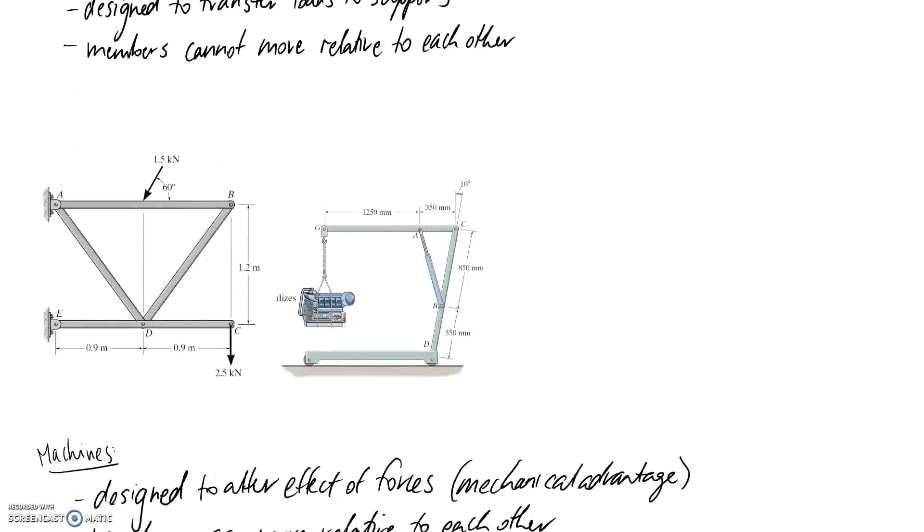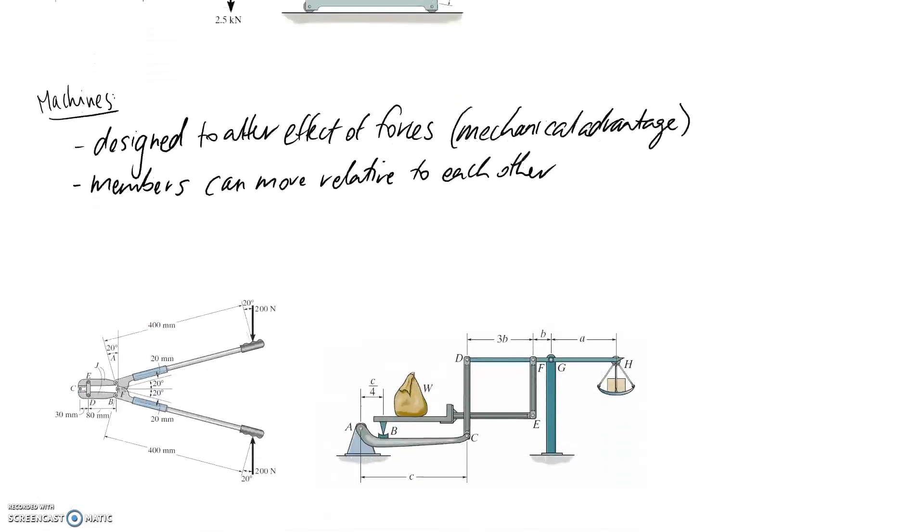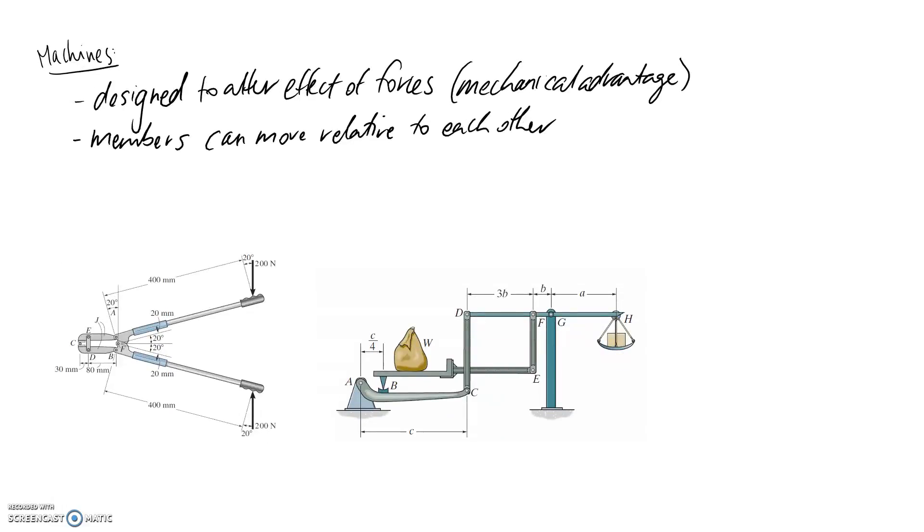So if we scroll down and look at what makes a machine a machine, it's going to differ on those two points. So the first one is that machines are designed to alter the effect of forces, i.e. mechanical advantage.